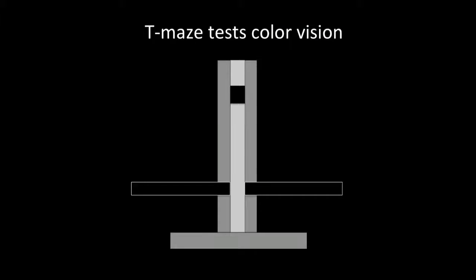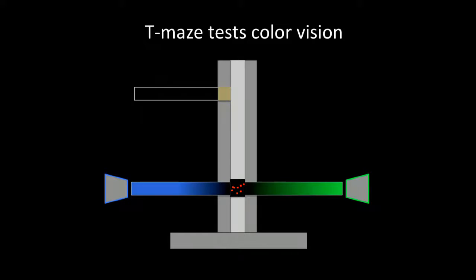To assay for color vision, we use a T-Maze apparatus. Essentially, we have a blue and green light at the end of two blackened tubes. We insert a tube of flies into an elevator that is lowered, and they're allowed to make their decision. After 20 seconds, we close off the tubes and count the flies.